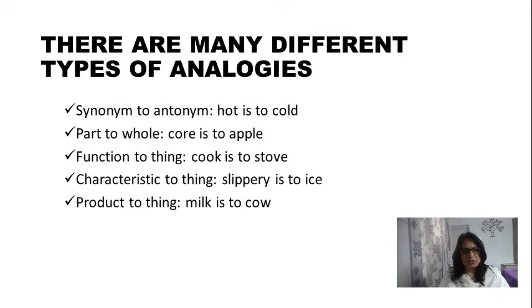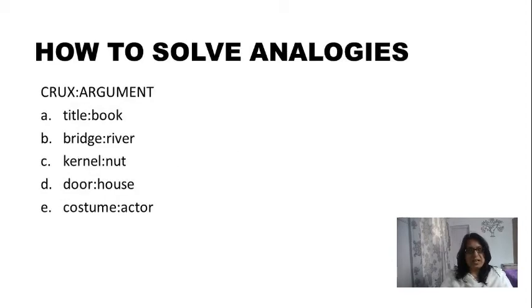Part to whole, that is core is to apple. There can be other analogies also like function to a thing, for example cook is to stove, or characteristic of something to another thing like slippery is to ice. It can also be a product to a thing, the relationship between the product and a thing, that is milk is to cow.